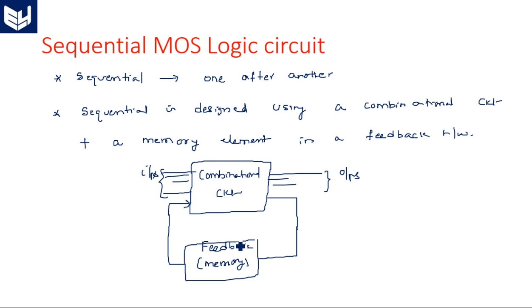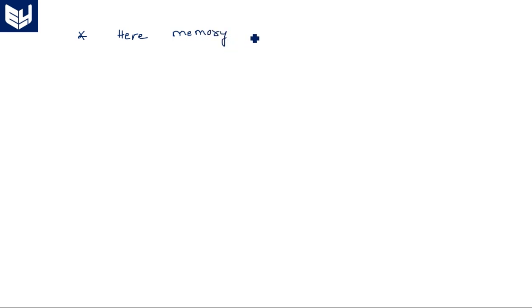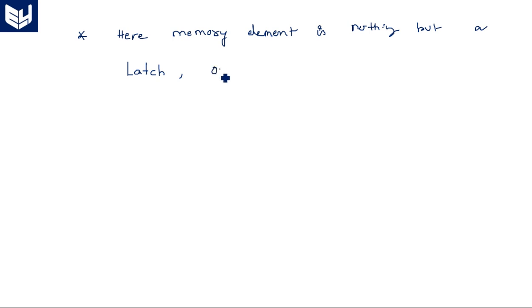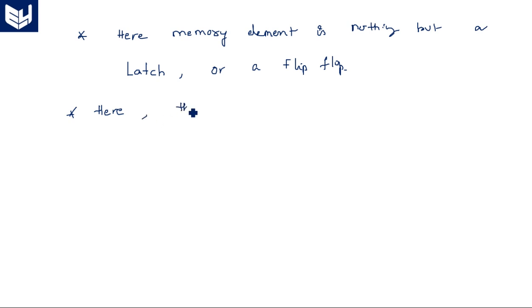If a combinational circuit has a memory element, we call it a sequential circuit, because a pure combinational circuit does not have any memory element. The memory element here is nothing but a latch or a flip-flop. Both latch and flip-flop are one-bit memory storage elements — they can store either 1 or 0 for one clock pulse at a time.